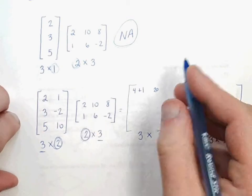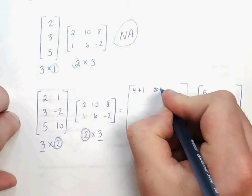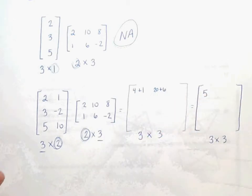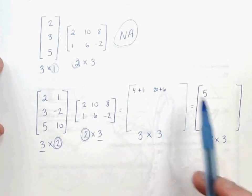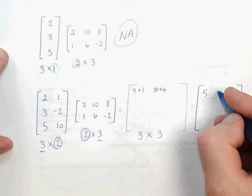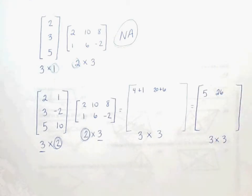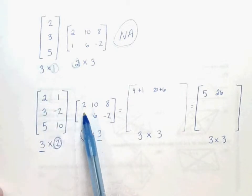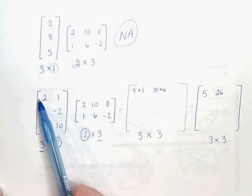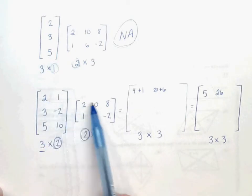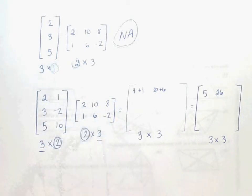1 times 6 is 6, so plus 6. 20 plus 6 would give us 26. That's the second element in our answer matrix. So we used this row with that column, this row with our second column. Now we've got to use our first row with our third column.